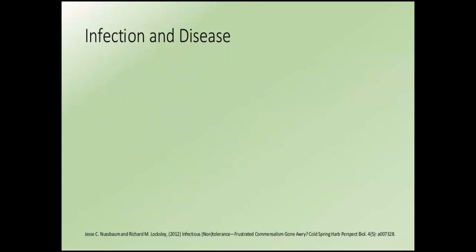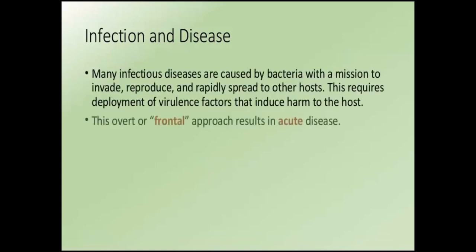A brief refresher on how infection with a microorganism can lead to disease. Most infectious diseases people are very familiar with — such as strep throat — involve bacteria that enter the body with a mission to reproduce themselves. They invade and reproduce as quickly as they can because their goal is to spread to other hosts. To do that, they deploy an arsenal of different virulence factors, which can be quite damaging to the host. This overt frontal approach results in acute disease symptoms that are very recognizable, and modern medicine was built on the recognition that bacteria can cause acute diseases and antibiotics can cure those things.